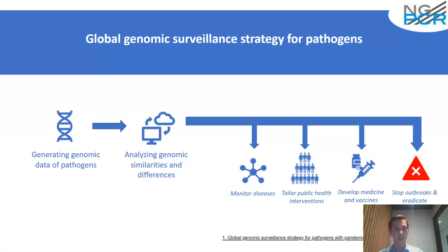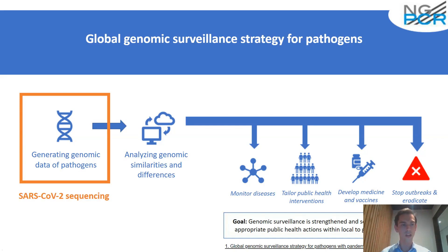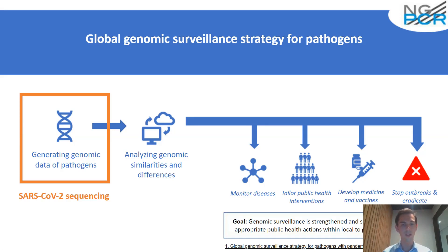The aim of this presentation is mainly focused on how we can actually improve the generating of genomic data, whereby we use SARS-CoV-2 sequencing as an example of how we can strengthen the goal of the World Health Organization — to strengthen genomic surveillance and have more skilled, quality, and timely appropriate public health actions within local to global surveillance systems.